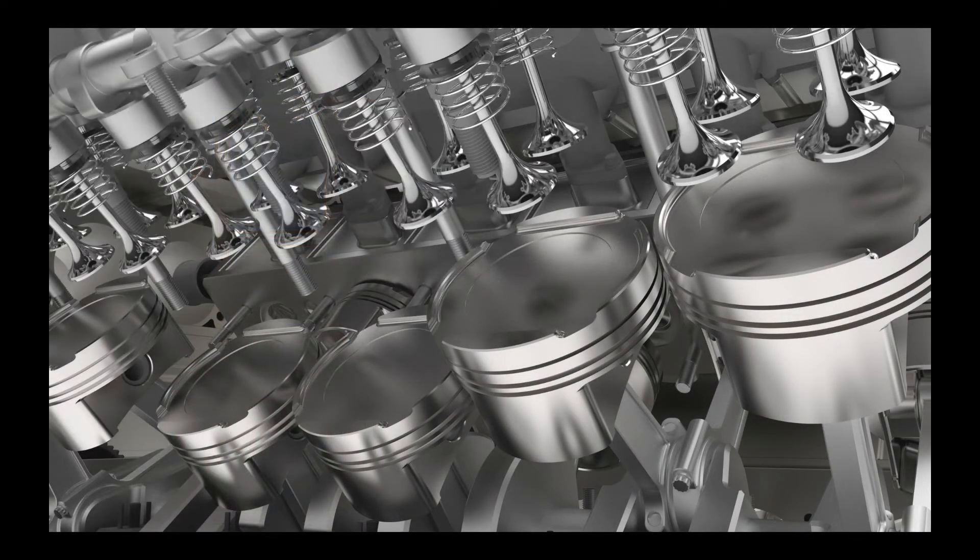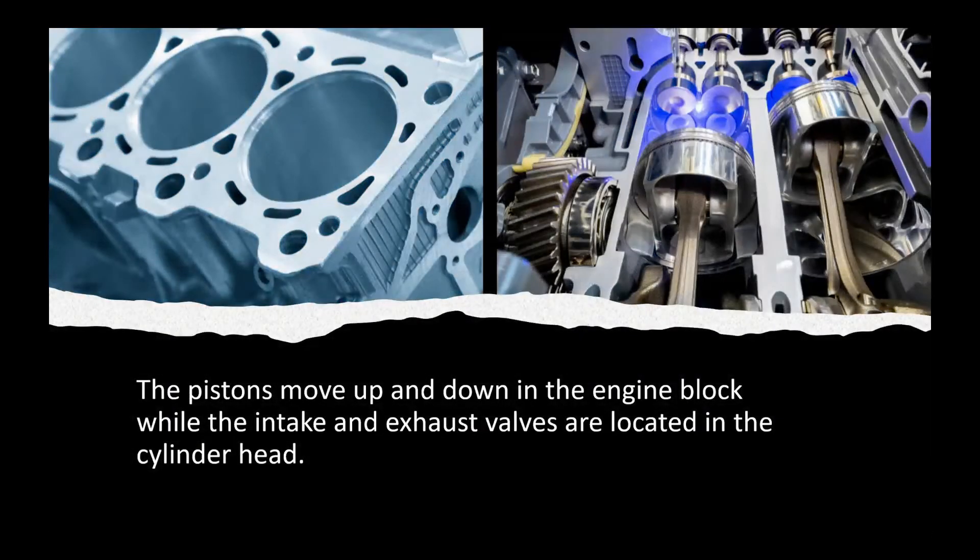Since all the pistons are connected to the crankshaft, they are continuously moving with each other. The pistons are aligned in a way that some are up while others are down. The pistons move up and down in the engine block while the intake and exhaust valves are located in the cylinder head.